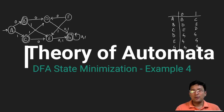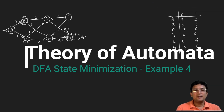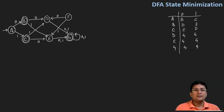Hello everyone, we will take one more example for the DFA state minimization. In this graph, you can see that A is the start state and B, C and G are the final states.